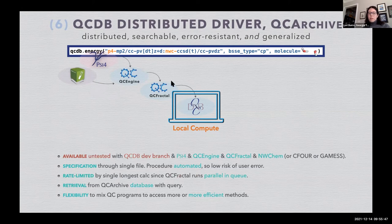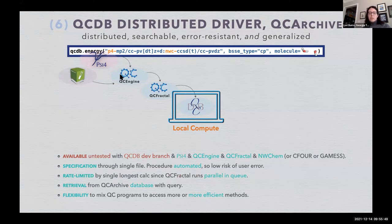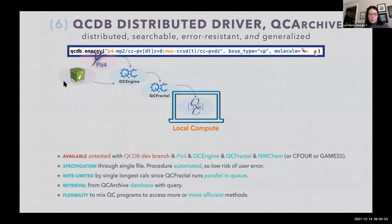But the logical extension is to then hook up the distributed driver to QCDB so that you are running QCDB, which then calls QC Fractal, which then calls QC Engine, which then calls whatever quantum chemistry program. So we finally returned to all of the advantages that we started with with hand-running files, only now you can do it in an automated fashion.